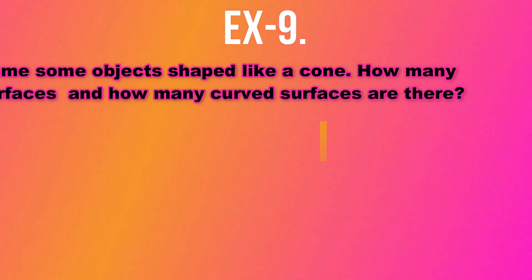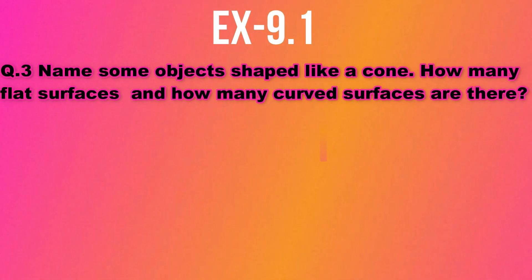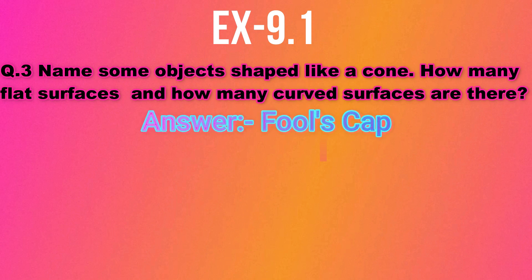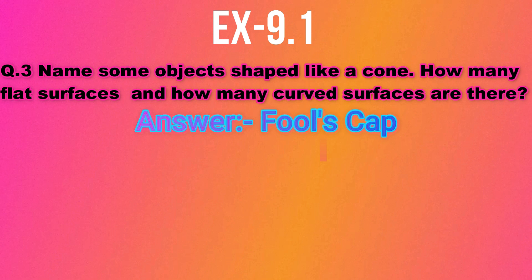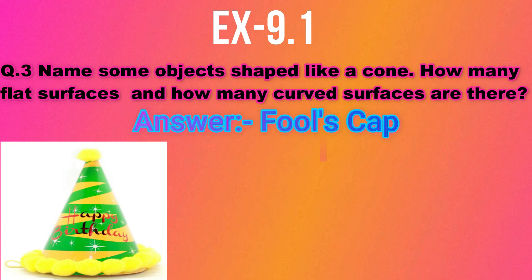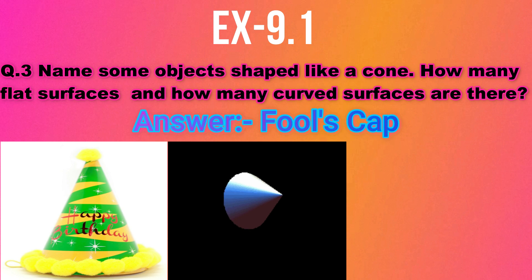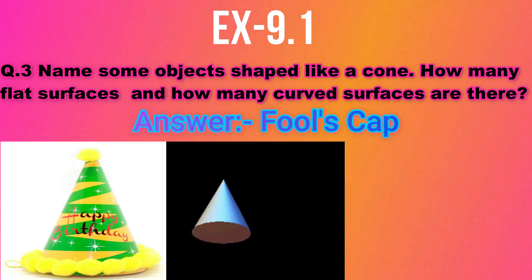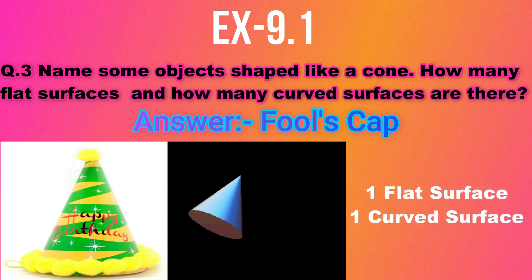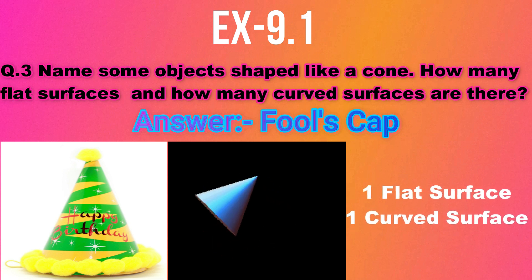Question number 3: Name some objects shaped like a cone and state how many flat surfaces and curved surfaces they have. One object is a foolscap. Here you can see a picture of a foolscap which is in the form of a cone. Clearly, a cone has one flat surface and one curved surface.